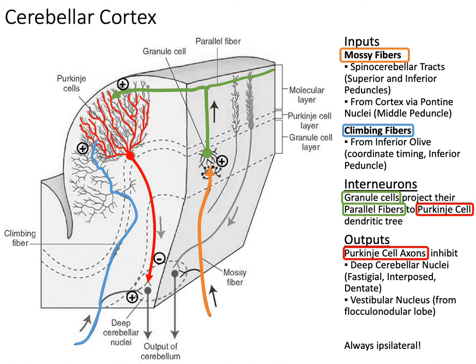Other inputs include climbing fibers, which come from the inferior olive. This is very important because they coordinate the timing of your movements — the correct sequence of events. It receives the afferent information and coordinates the timing of your movements.